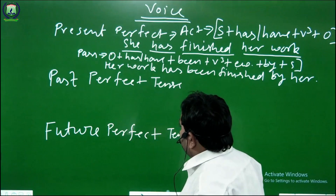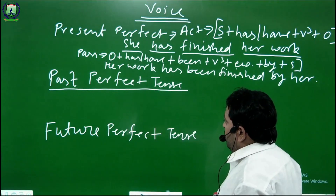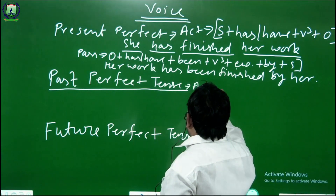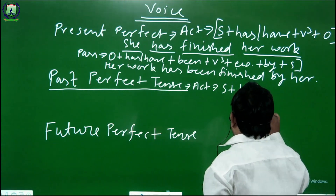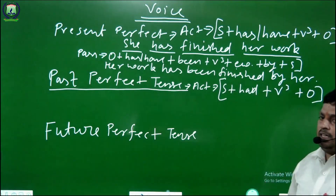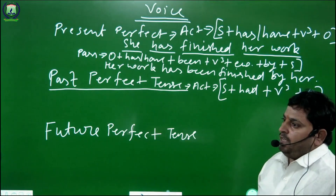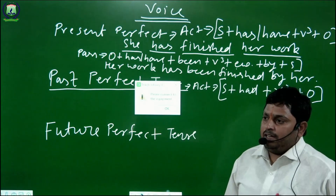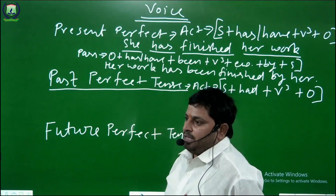Now dear students, I am going to tell you about the past perfect tense — how we change the sentence into passive voice. The structure of active voice is: subject plus had as helping verb, plus third form of the verb, plus object. One important thing: we change a sentence into passive voice only if it is related to a transitive verb, meaning the sentence has an object. If there is no object, it cannot be changed into passive voice. Only transitive verbs change into passive voice, not intransitive verbs.